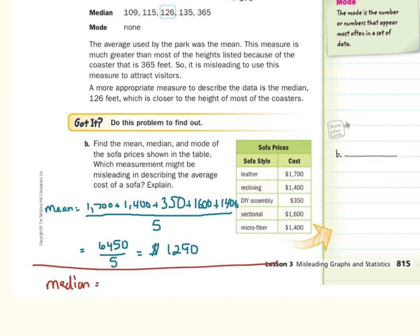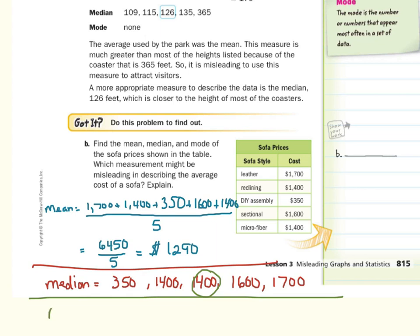What about the median? Well, we need to list these out from least to greatest, and so we would have 350, then 1400, 1400 again, 1600, and 1700. And the middle number here is the 1400, so that's the median. And then lastly, the mode is the number that occurs the most often, and that's the 1400 again.